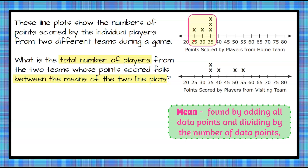So we have 25 plus 30 plus 35 plus 35 plus 35. When we add those all up together — you can use your calculator — we get a total sum of 160. Now we have five data points, so we're going to divide 160 by 5, which gives us 32. So the mean, or average points scored by the players on the home team, was 32 points per player.